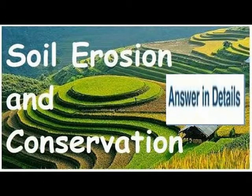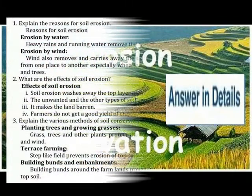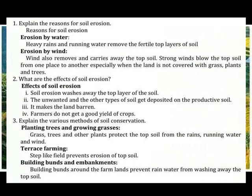Answer the following question briefly. Explain the reason for soil erosion. Erosion by water: heavy rains and running water remove the fertile top layers of soil.